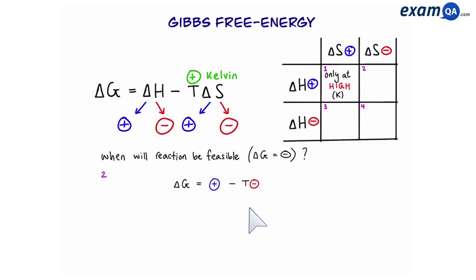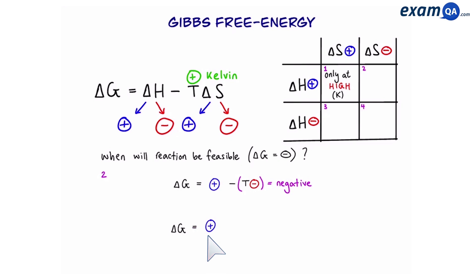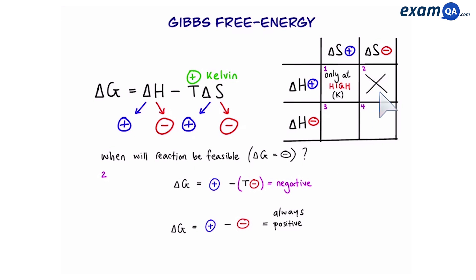Scenario two: positive delta H but negative delta S. That means the T delta S term will always be a negative value, so we have a positive value take away a negative value. Plus take away minus is always positive. Since delta G will always be positive, the reaction will never be feasible.